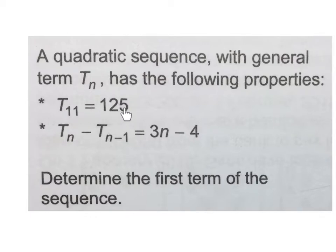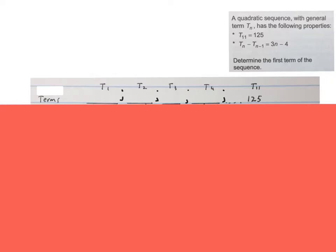So they gave us one of the terms in this quadratic sequence and they gave us a formula for the first difference. What you need to get your head around is that the n over there and the n over there is the same value. Let's plan quickly. We have a quadratic sequence with term 1, term 2, we don't know, 3, 4, and so on, but we do know term 11 is 125. So in the top row we have our terms.